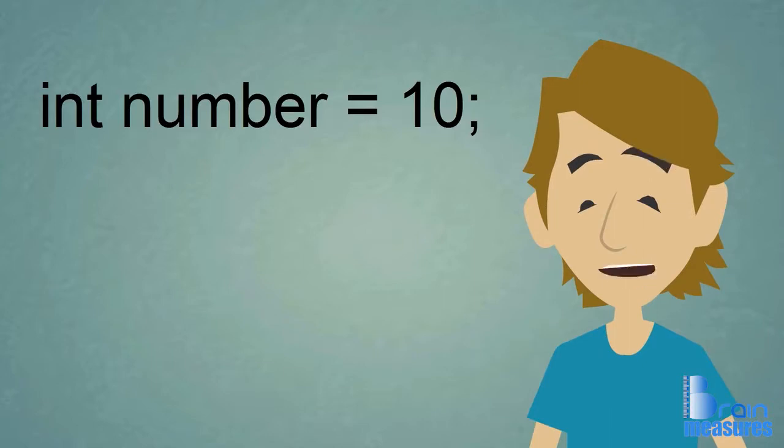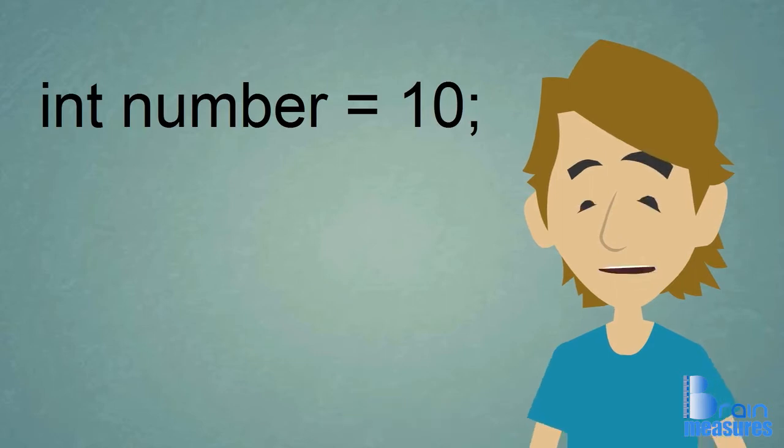So let's look at this for a moment. The first word is int which is the type of variable. The second word is number which is the name of the variable. And lastly, the number is what the variable is equal to.